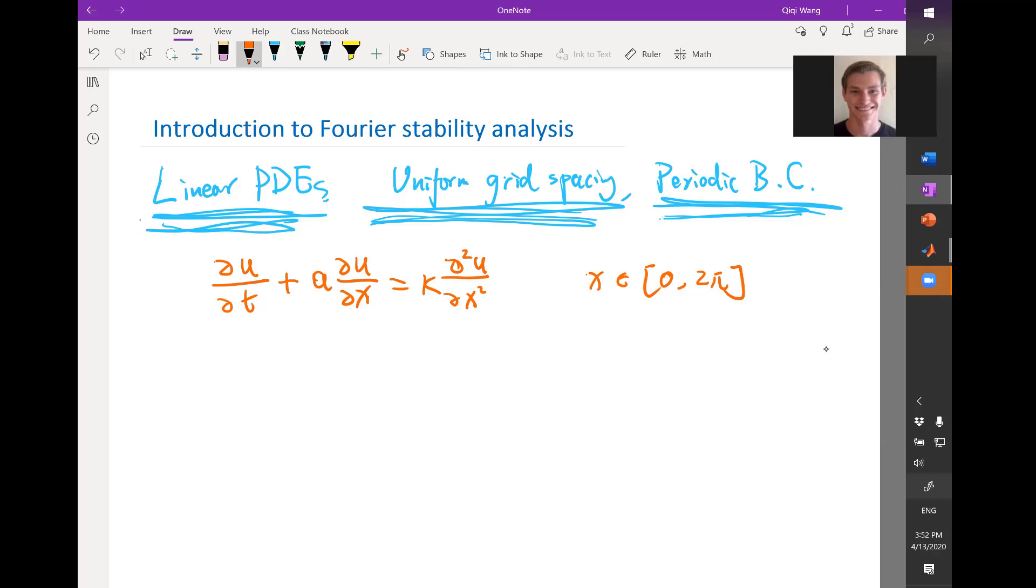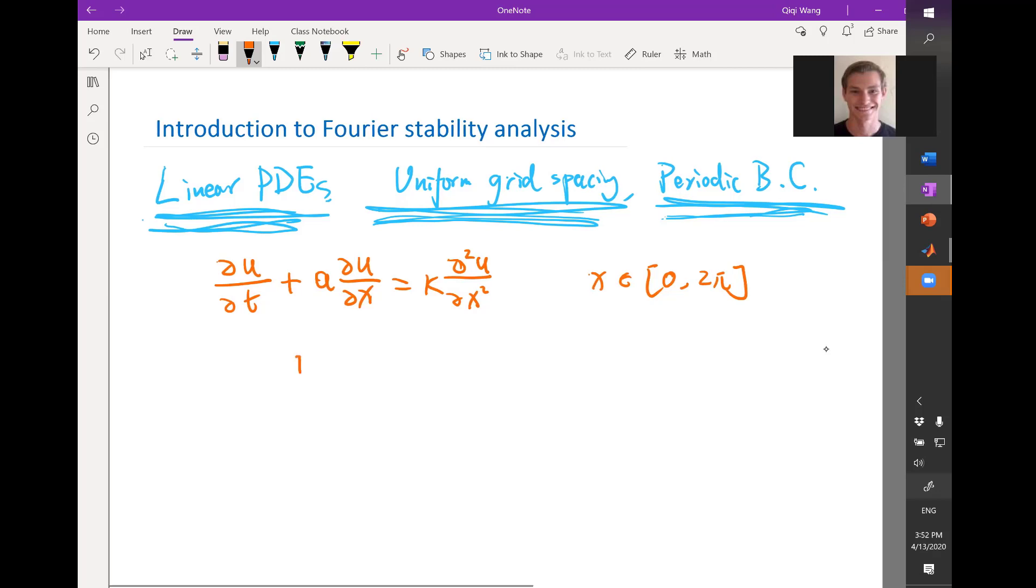So the start of the Fourier analysis is the realization that if you plug in u equal to the summation of sine and cosine terms. Let's say u equals summation over k of uk cos(kx) + vk sin(kx).